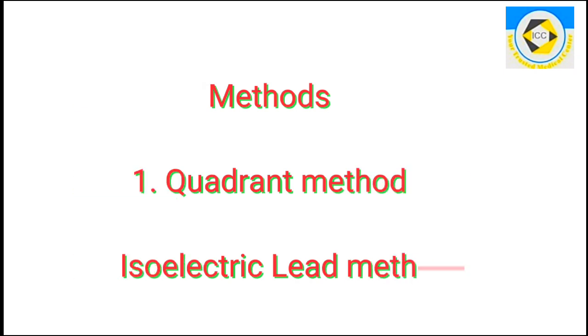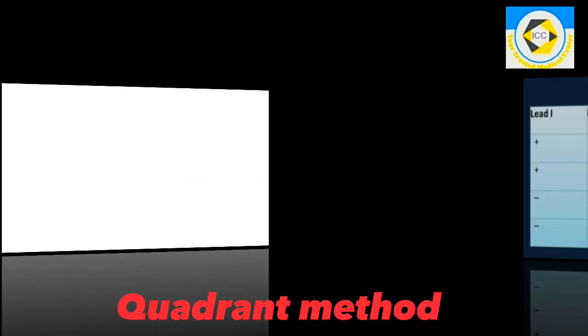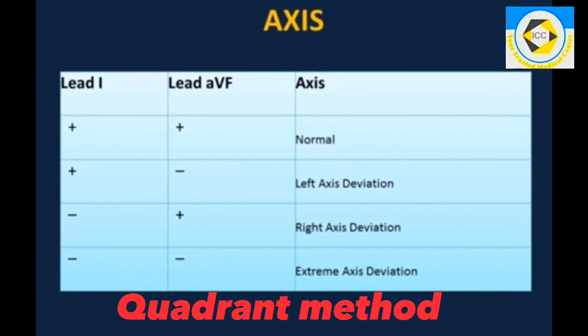There are several methods to estimate cardiac axis, we will discuss two of them. Number one is Quadrant method.